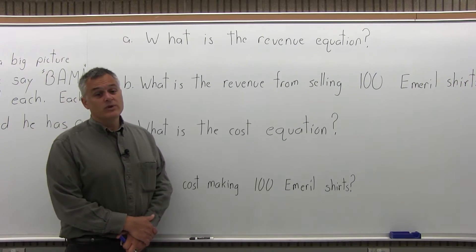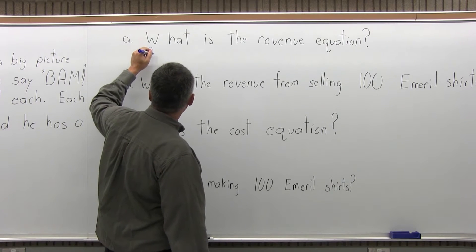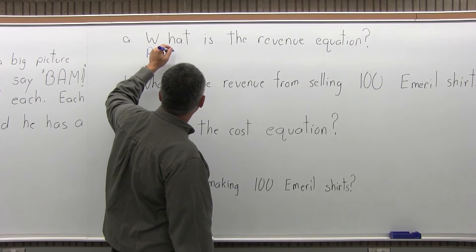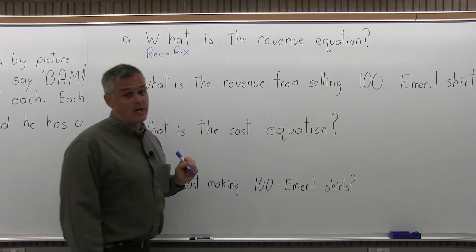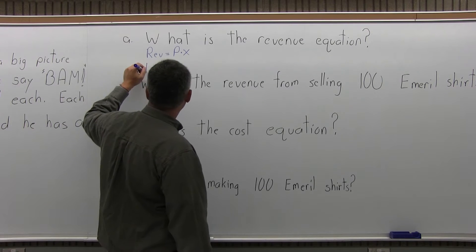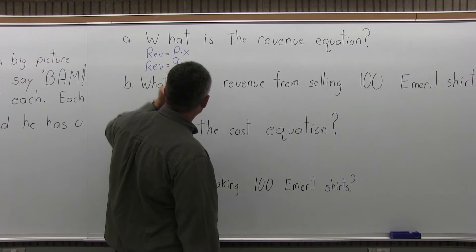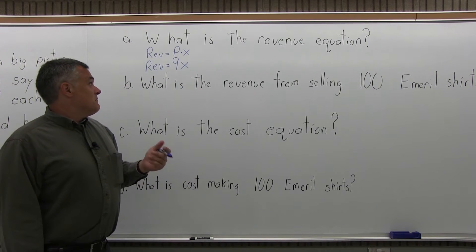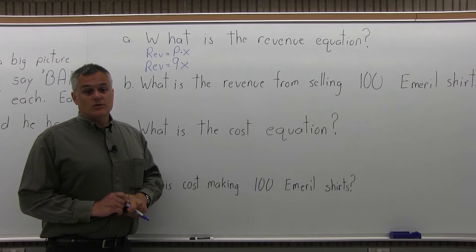Part A, what is the revenue equation? So for any problem, the revenue equation, revenue equals the selling price times X where X is the number of items sold. So for this particular problem, the revenue equation is $9 times X. And from that you can figure out the revenue from selling any number of shirts you want.